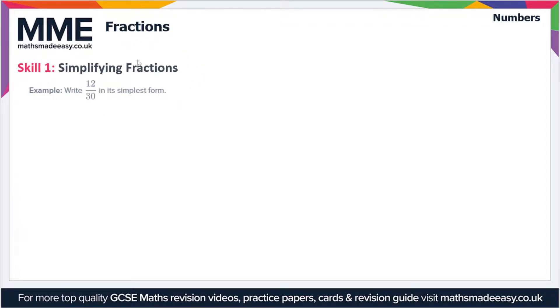We'll start off looking at simplifying fractions. In this example we have to write 12 over 30 in its simplest form. So let's just rewrite 12 over 30 here.